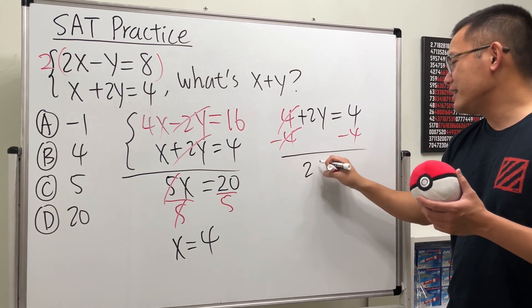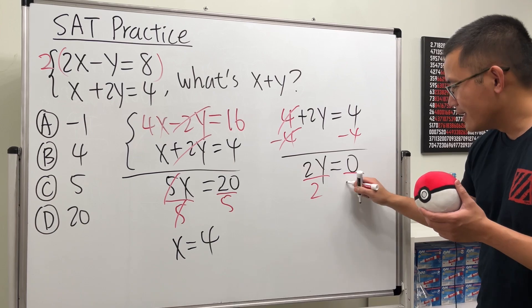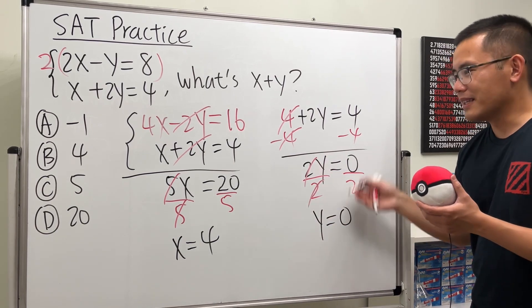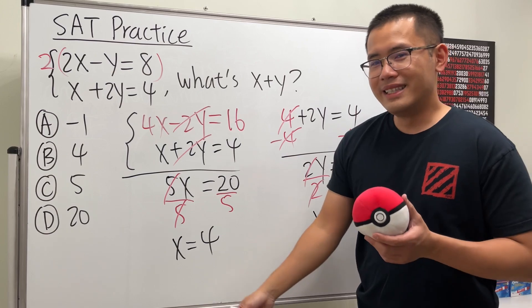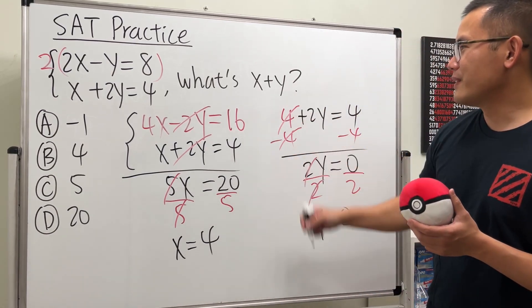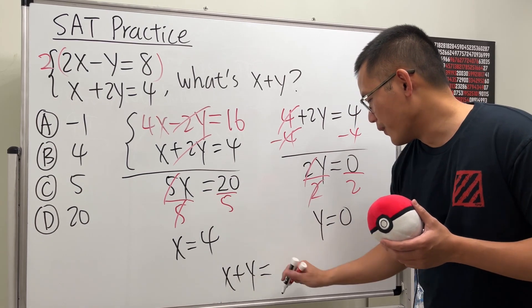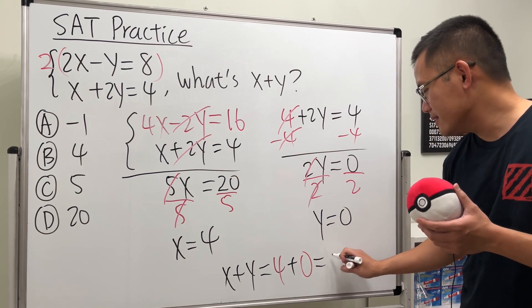work anyway. On the SAT, once you know the answer, once you're confident, you don't have to do all this. But anyway, in fact, once you know what x is, you know the answer already. Because to find out what x plus y is, it's of course just 4 plus 0, and the answer is just equal to 4. So the answer is B.